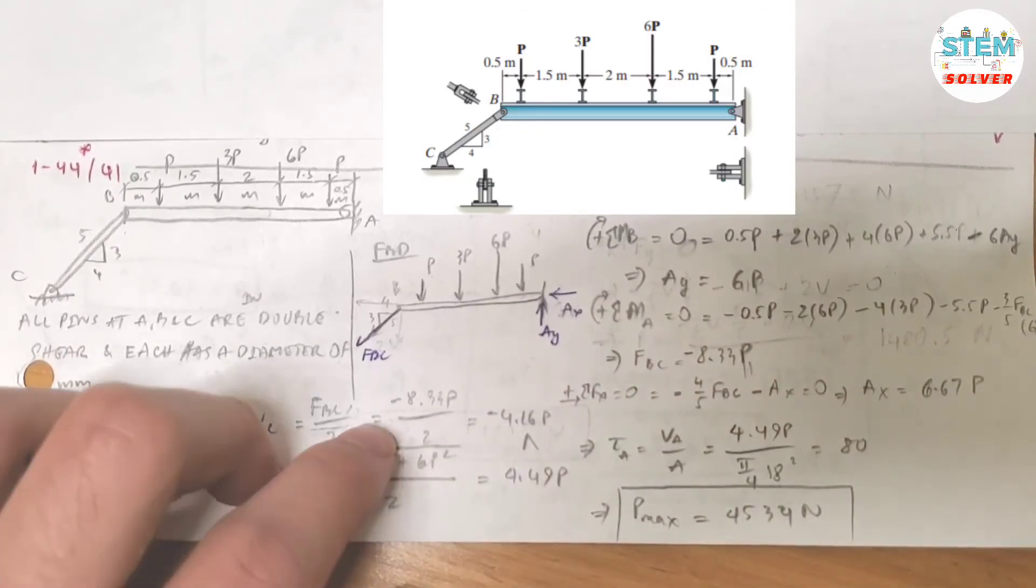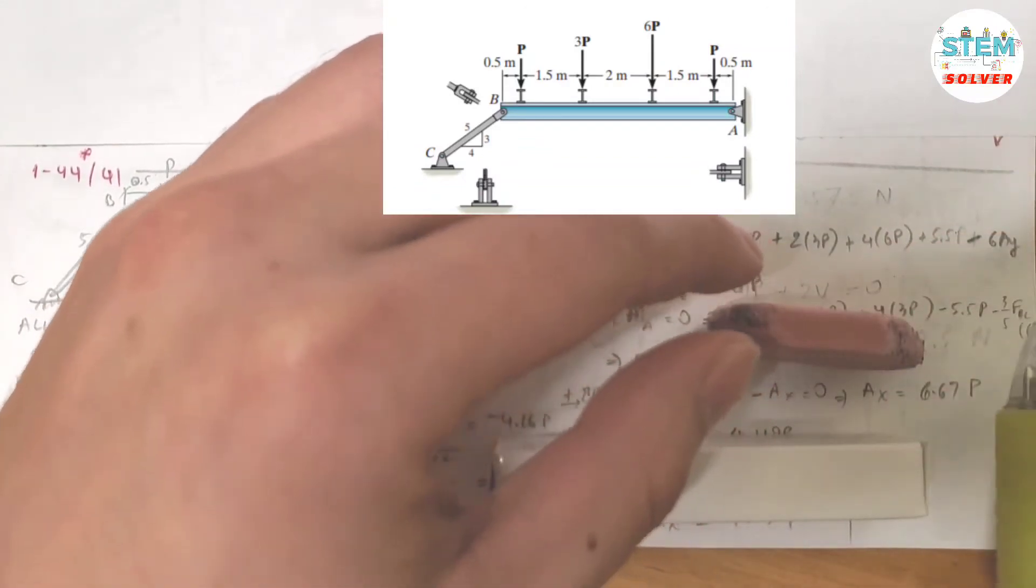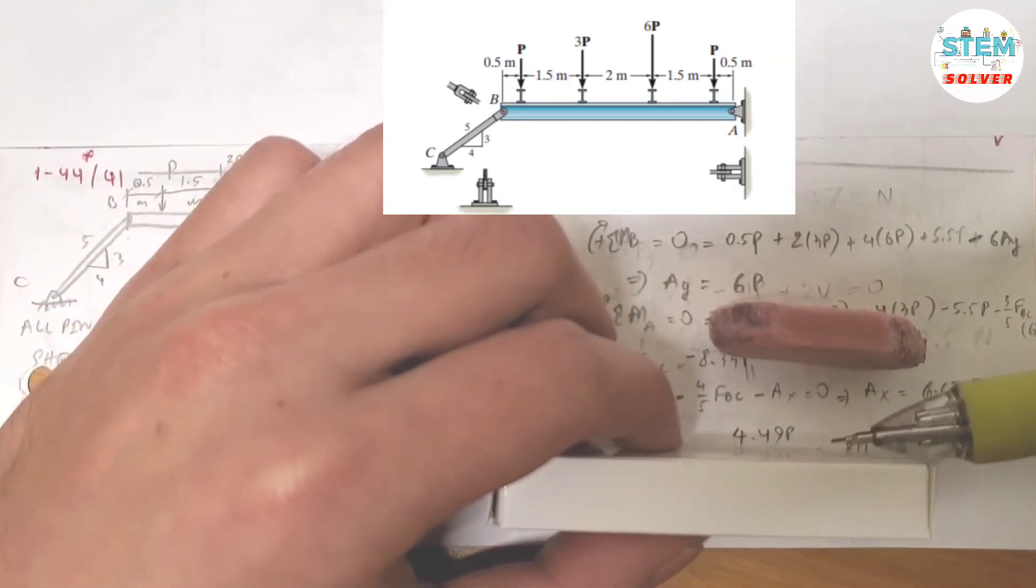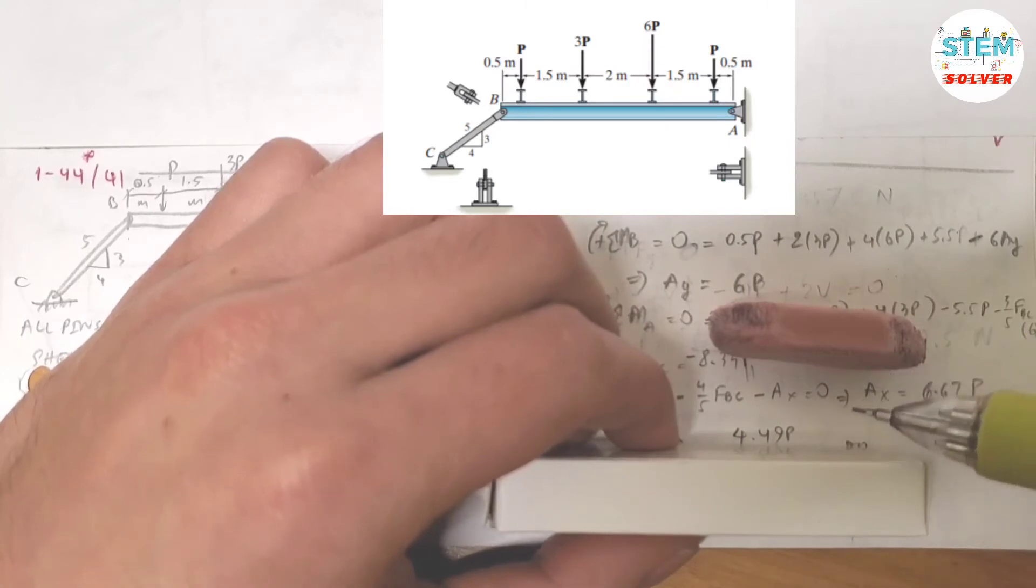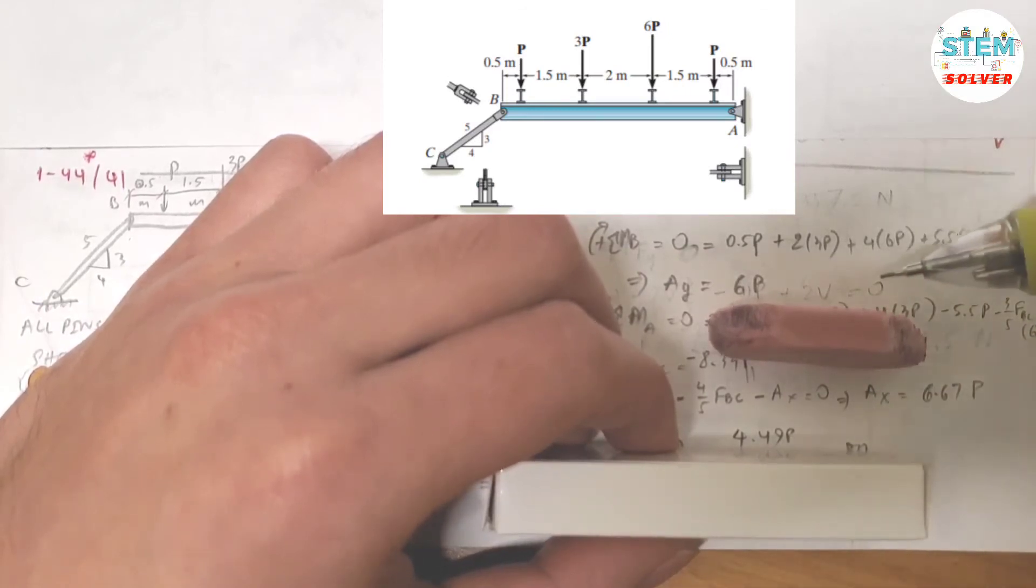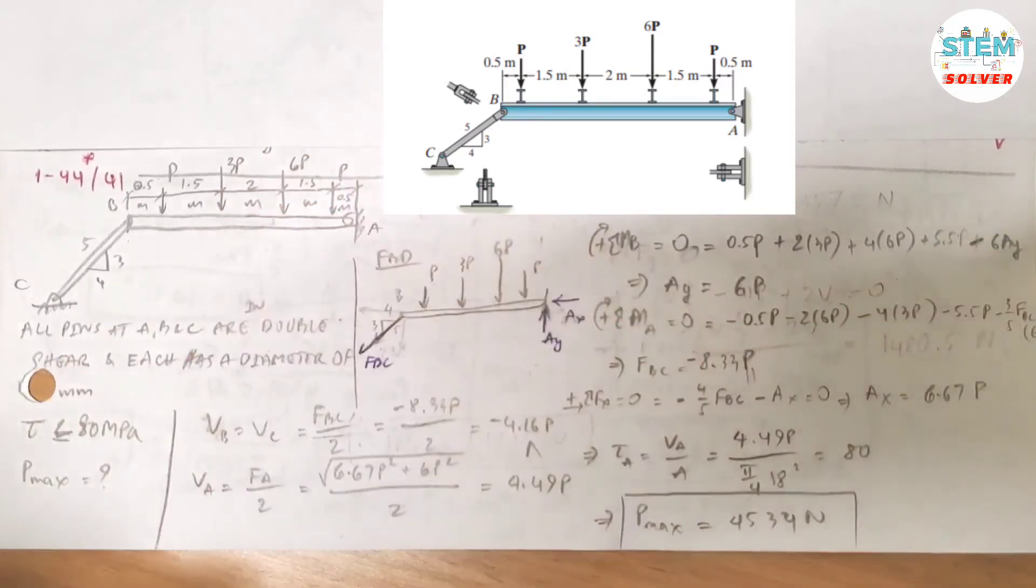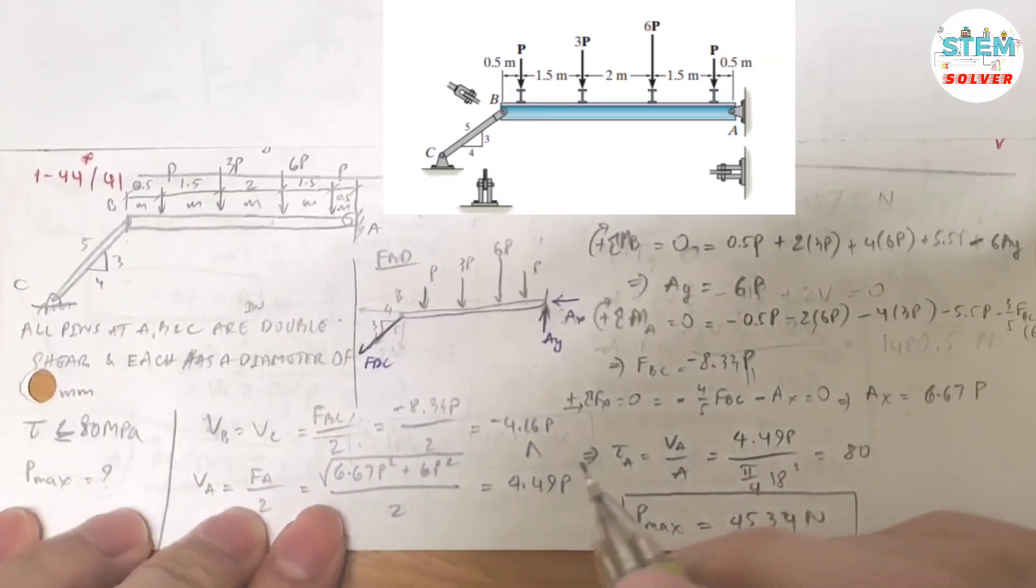So what does it mean to be double shear? Let me illustrate it to you. Imagine you have a pin right here between this one and this one. You have one contact surface right here and the other contact surface over here, so one, two. So that is a pin in double shear. If you have a bolt that goes all the way through this subject and this subject, I hope that makes sense. So divide that by 2, I got negative 4.16P.